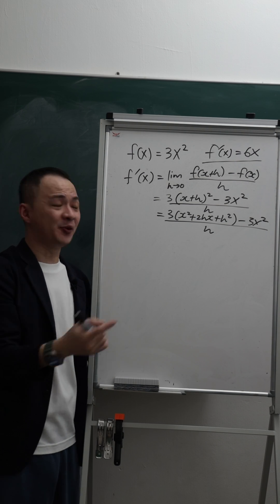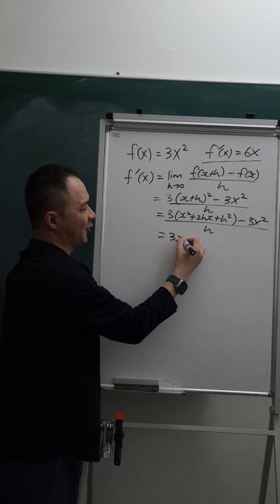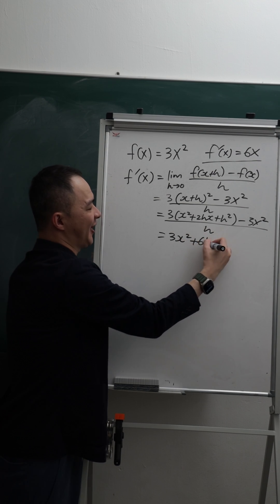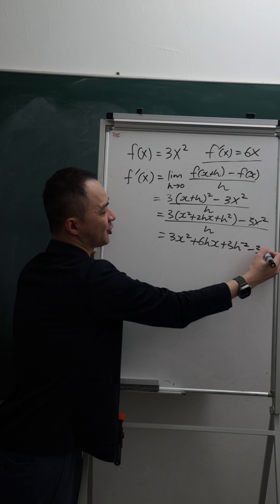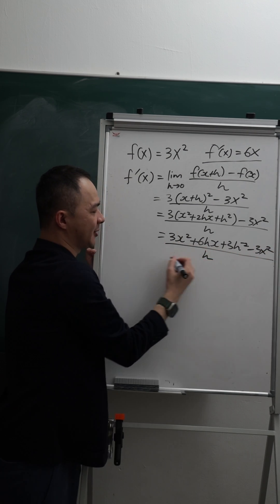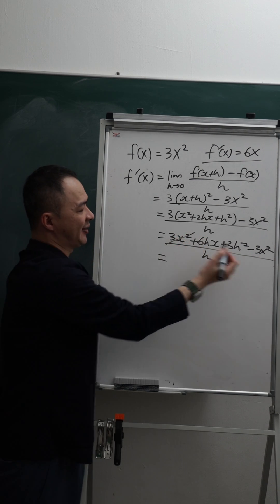Then what we do next is multiply the 3 into every term. So we get 3x² + 6hx + 3h² and then minus 3x² over h. You can see 3x² and minus 3x² can be eliminated, they become 0.